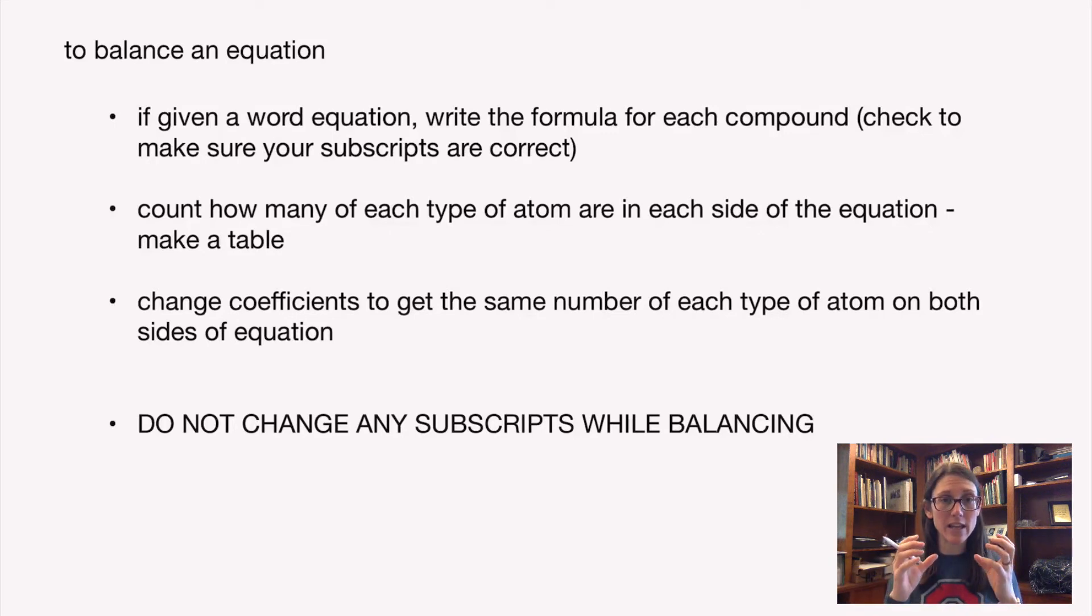Make sure that your subscripts are correct before you go any further. You first have to define what the chemicals are and your subscripts do that. Then count how many of each type of atom you have on the left side and the right side of the reaction. Write that down, make a table so you know what you're working with.